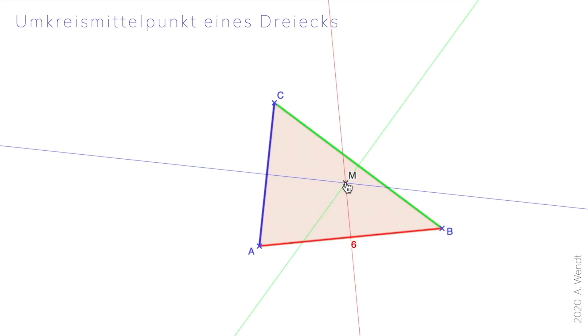Jetzt steche ich den Zirkel in M ein, spanne ihn auf CA und schlage einen Kreisbogen. Die Eckpunkte des Dreiecks liegen jetzt auf diesem Kreis. Und das ist der Umkreis des Dreiecks.